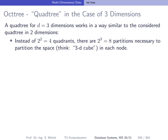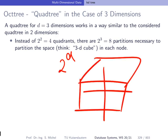For more than two dimensions, the quadtree concept still works: an inner node simply has 2^d children. For three dimensions, every partitioning produces eight partitions — an octree — defined by one three-dimensional data point, dividing a cube into eight sub-cubes.